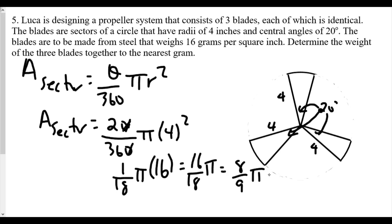So that's only one. So we have three of them. So we're going to multiply this upwards here and multiply by 3. So 3 times 8π over 9. That simplifies to 8 over 3π. So that's the total area of all three blades. And now it says here, if each blade weighs 16 grams per square inch, we're going to take this 8/3π and multiply by 16 to get the weight to the nearest gram.